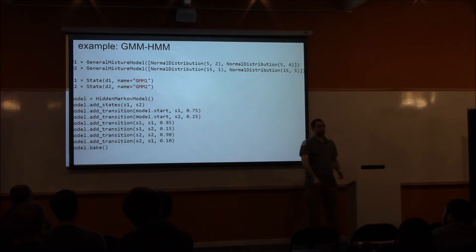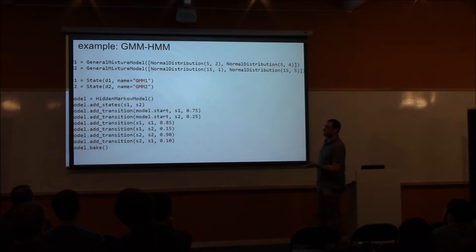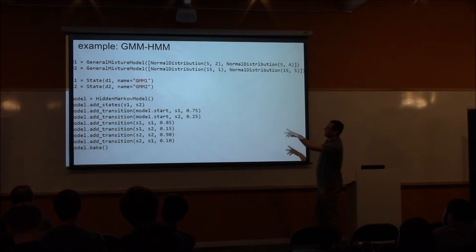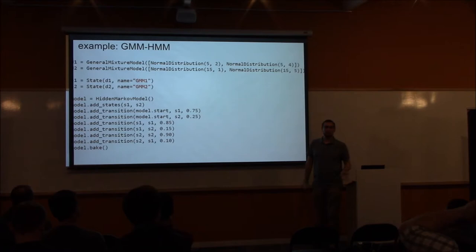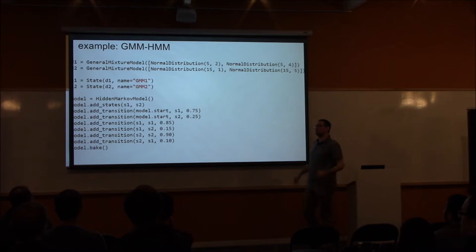Regarding model stacking for hidden Markov models: you can put a distribution inside a general mixture model and then put that general mixture model inside each HMM state. In the code example, you first define your general mixture model with your distributions D1 and D2. Then for states S1 and S2, instead of putting a normal distribution in each state, you put this general mixture model. If you want to switch from a mixture model to a normal distribution, you just change D1 and D2 — the remainder of the code is the same. In other packages, you might have to explicitly define that you want a Gaussian mixture HMM versus a plain Gaussian HMM, whereas here you don't have to say anything explicitly.